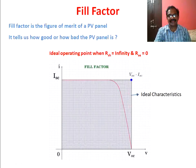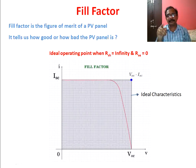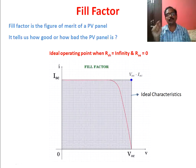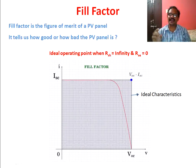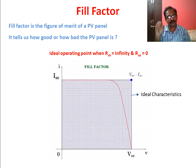If it is the ideal characteristics, then what is the operating point — the peak power point? It is that blue dot, which is the theoretical or ideal peak power. This is a multiplication of VOC into ISC. VOC multiplied by ISC is the actual power drawn by the solar panel when RSH is infinity and RSE is zero, which is called the ideal or theoretical operating point of a solar cell.